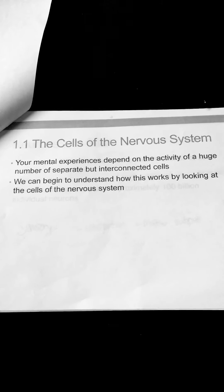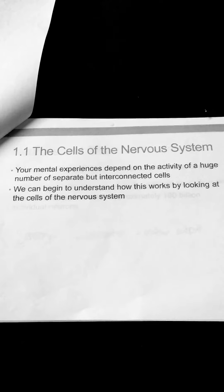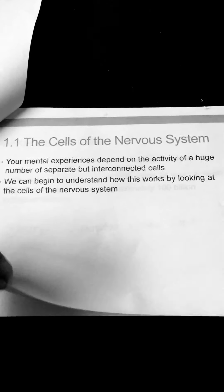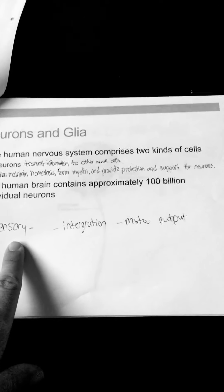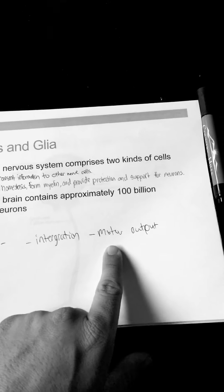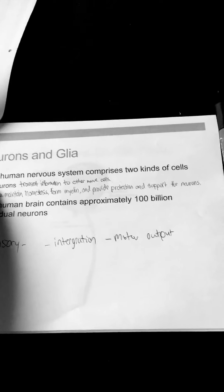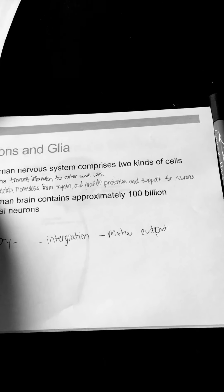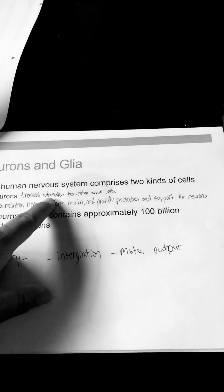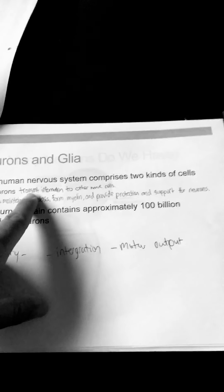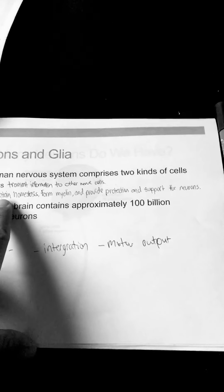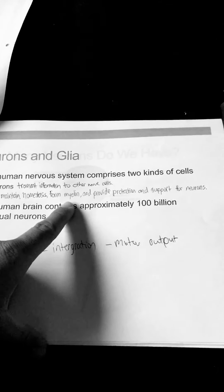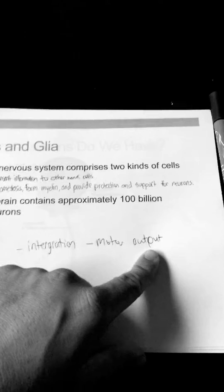These will be really easy and fast for you to learn. The cells of the nervous system — your mental experiences depend on the activity of a huge number of separate but interconnected cells. You have your sensory inputs, your integration, your motor output. The human nervous system comprises two kinds of cells: neurons, which transmit information to other nerve cells, and glia, which maintain homeostasis, form myelin, and provide protection and support for neurons.